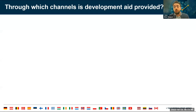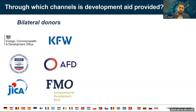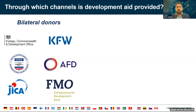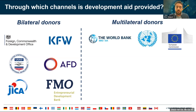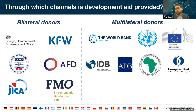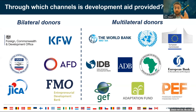Who provides development aid? We can divide those actors into two buckets. On one hand, bilateral donors — development aid going directly from the donor country to the beneficiary country, such as the UK through the FCDO, Germany with KFW, and France with AFD. On the other hand, development aid can take the form of contributions to international organizations — multilateral aid. At the global level the main players are the World Bank, United Nations agencies, and the European Union. At the regional level there are regional development banks like the IDB and ADB, and finally vertical funds focused on specific problems like the Global Environment Facility.